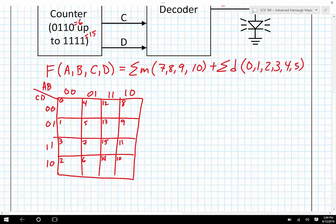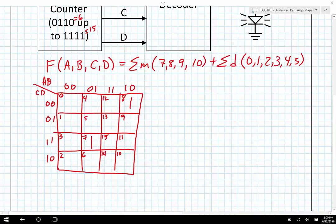7, 8, 9, and 10, those are going to be the ones. So here's a 1, 8, 9, and 10. Those are pretty spread out. I hope that the don't-cares make things better.